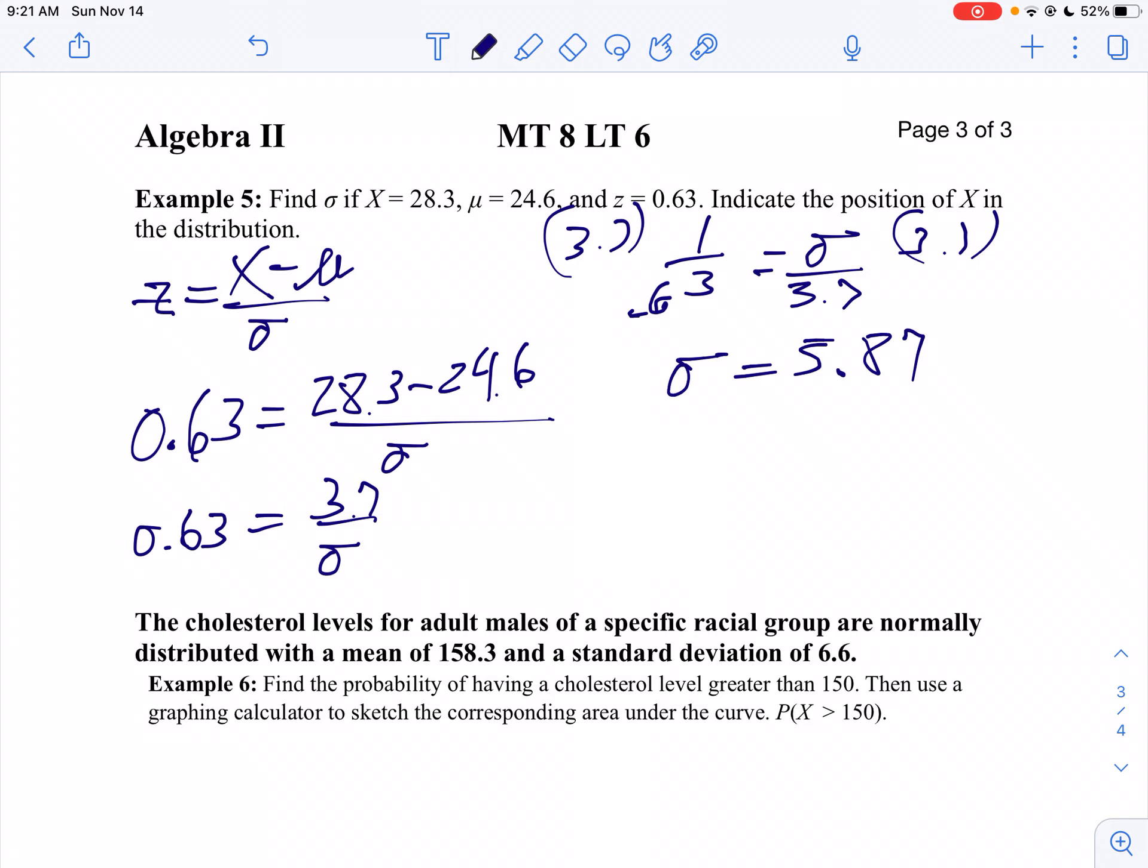Now, indicate the position of x in the distribution. Well, your z-score, which is 0.63, means you're 0.63 standard deviations to the right of the mean. So if I graph my normal distribution, I'm going to be about right there, 0.63 standard deviations. When it changes concavity, that's where your 1 standard deviation is.